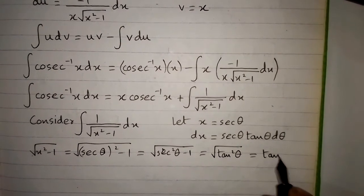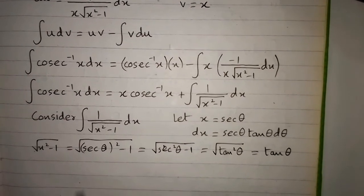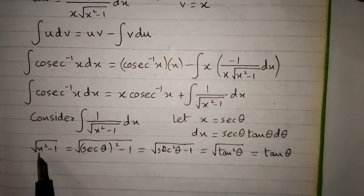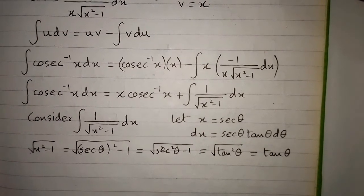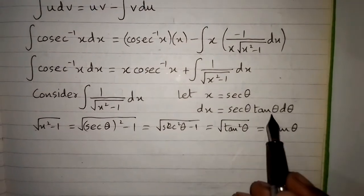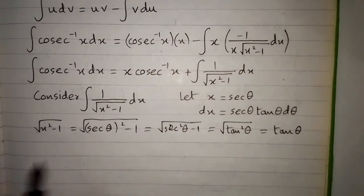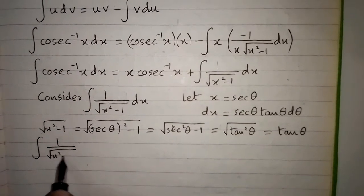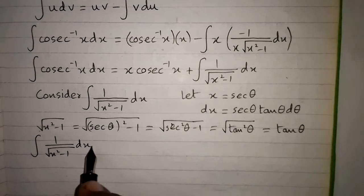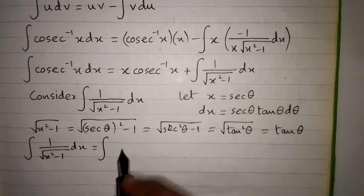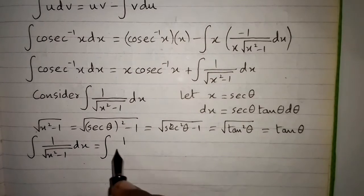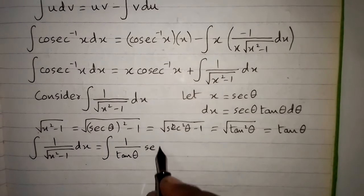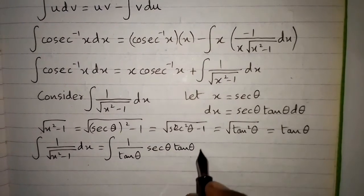We can see that x equals sec θ and square root of x squared minus 1 equals tan θ, and dx equals sec θ tan θ dθ. Substituting these values, the integral of 1 upon square root of x squared minus 1 dx becomes the integral of 1 upon tan θ times sec θ tan θ dθ.